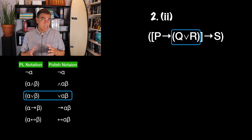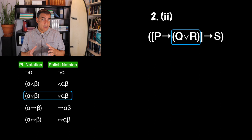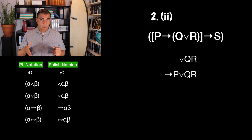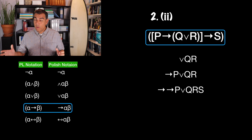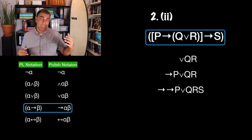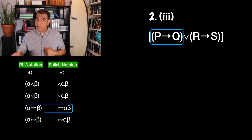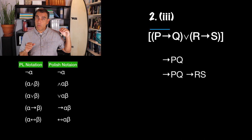Number two: again I see the inner parentheses Q or R, so I start with or Q R. That's the consequent of a conditional, so I write arrow P or Q R. And that whole thing is the antecedent of a different conditional, so I write another arrow: arrow P or Q R, then consequent S. Number three: I have two inner parentheses, both of which are conditionals. So I'll have arrow PQ and also arrow RS. Those two things are disjuncts, so I write or, then arrow PQ, then arrow RS.